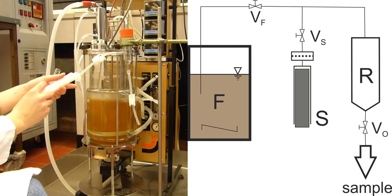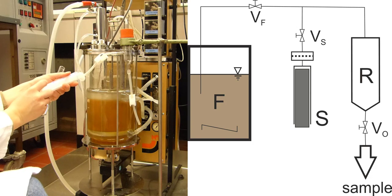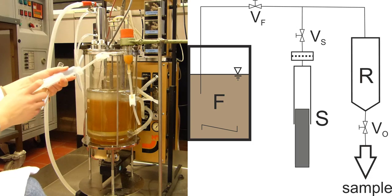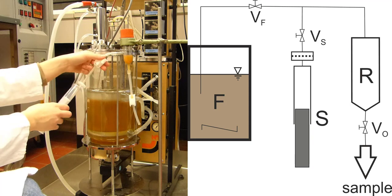For the first step, valves S, F, and O are all closed and then the valve to the syringe is opened and the syringe plunger is pulled out to create a lower pressure in the overall sampling system.